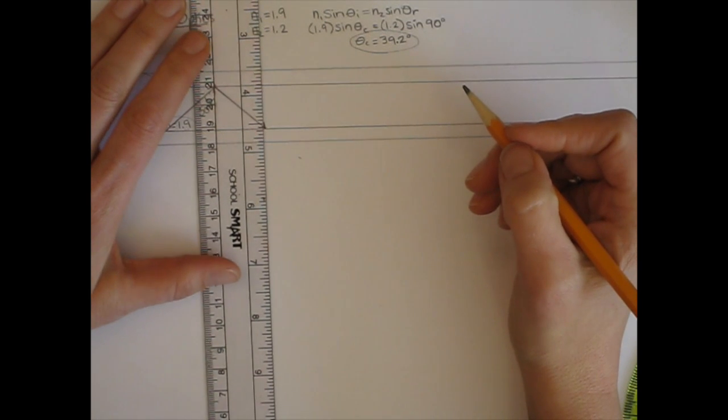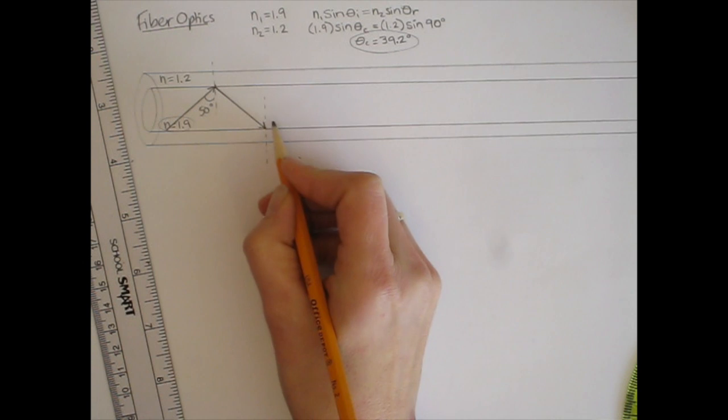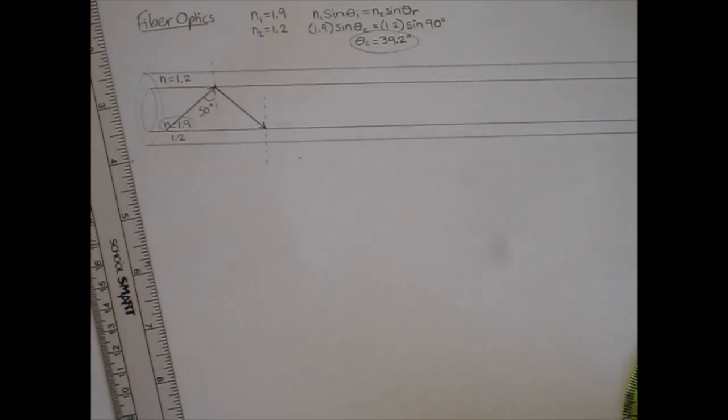Is it going to refract through this boundary? This is a boundary between the 1.9 and the 1.2 material again. Remember the 1.2 material surrounding the core. Well,